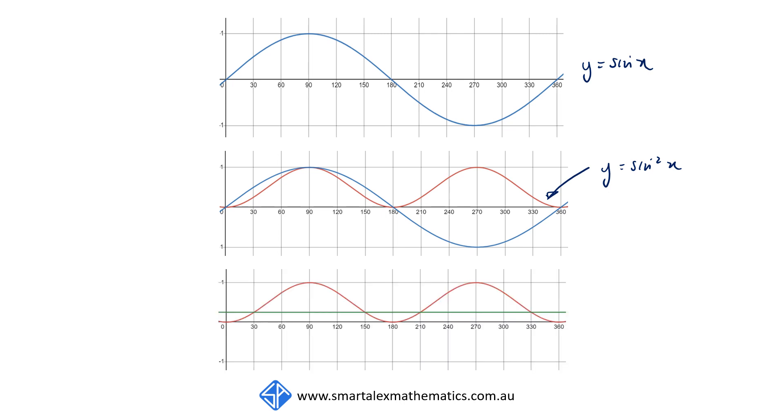So when we're solving sine squared x equals one quarter, what we're actually looking for are the points of intersection of the sine squared x graph, which is the red graph here, and the green line y equals one quarter.